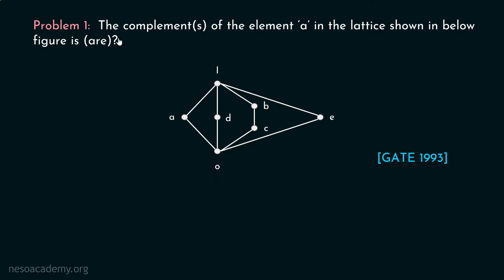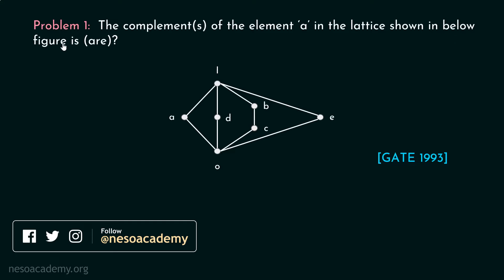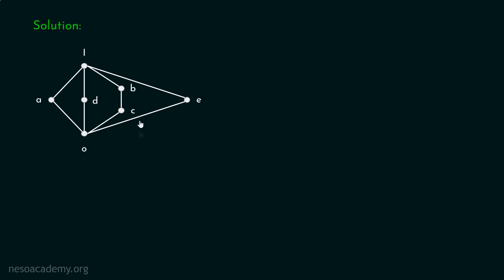Consider this problem: the complement or complements of the element A in the lattice shown in the figure below — what are they? This is the Hasse diagram available in front of us. This is actually a lattice, and we have to find the complement or complements of element A. This question has been asked in GATE 1993. I would encourage you to pause the video and try to answer this question on your own. Let's move on to the solution.